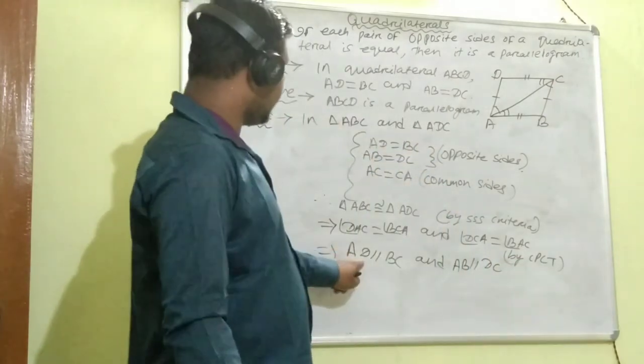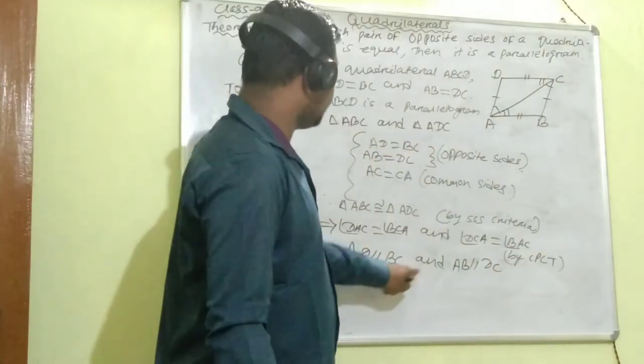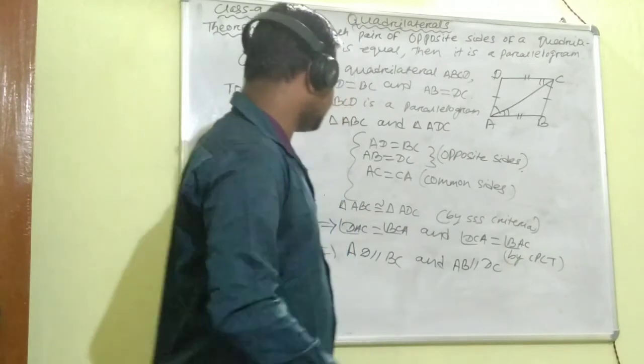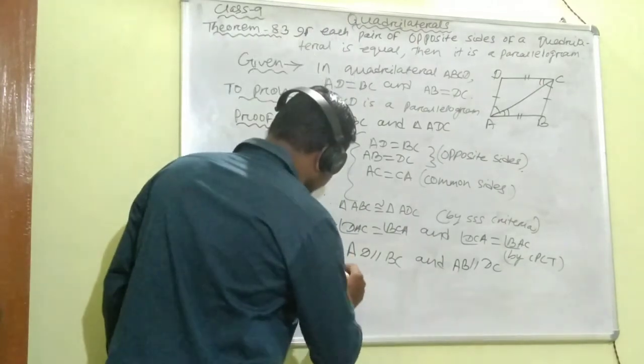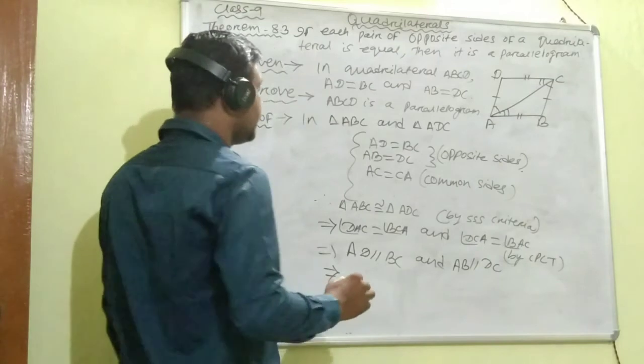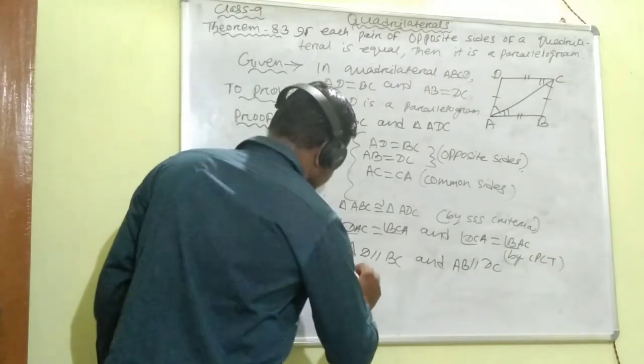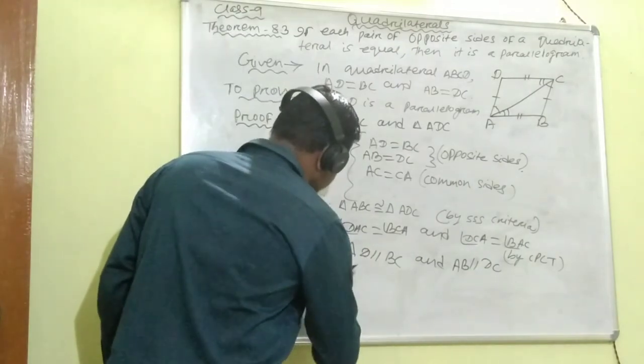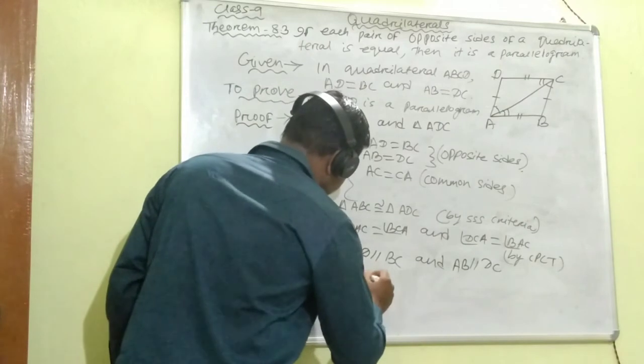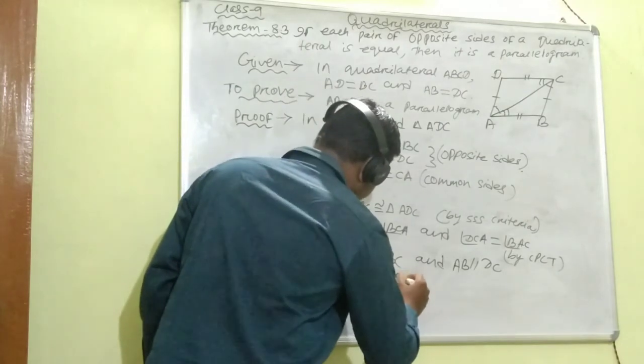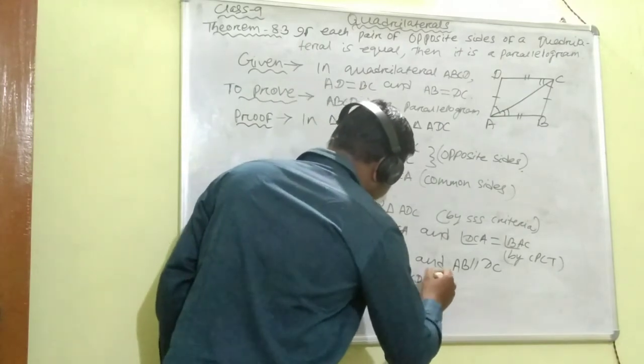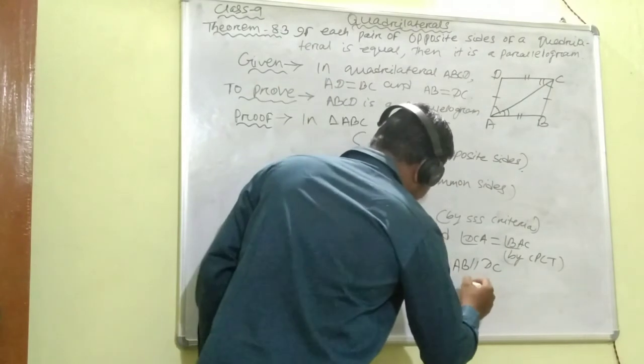As we got AD parallel to BC and AB parallel to DC, hence the quadrilateral ABCD is a parallelogram.